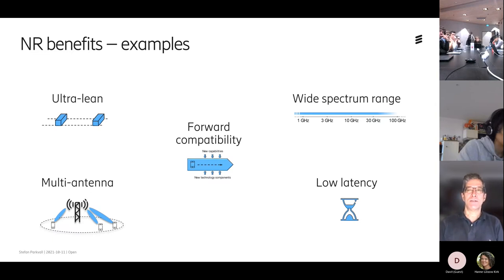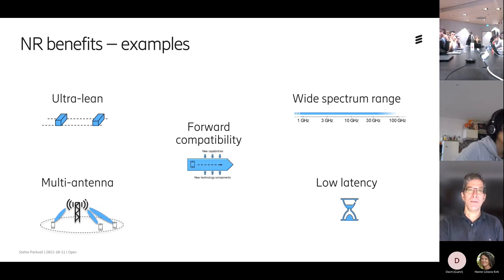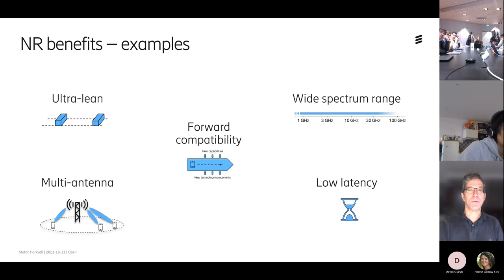First, NR covers a wider spectrum range. LTE was designed for below 1 GHz up to about 4–5 GHz, but NR goes all the way up to 52.6 GHz, and in Release 17 up to 71 GHz — a much wider frequency range including millimeter wave. Multi-antenna support is integrated from the beginning — needed at very high frequencies where the link budget is tough and beamforming is essential.